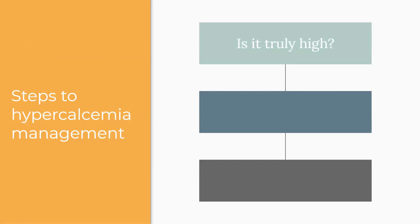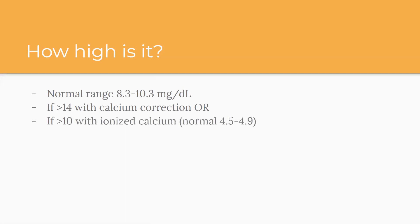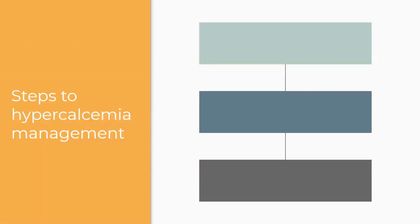Step one: is it really high? You recheck and confirm it. Step two — how high is it? And you actually think about this simultaneously with step one, because if it's super high on the first draw, I'm more concerned and won't necessarily wait. Normal calcium is typically 8.3 to 10.3 depending on your lab. If it's greater than 14 on corrected calcium, or ionized calcium greater than 10 (normal up to 4.9), or the patient is symptomatic, they need the ER for IV fluid correction. Symptoms include confusion, thirst, frequent urination, dehydration, lack of appetite, nausea, and muscle weakness.